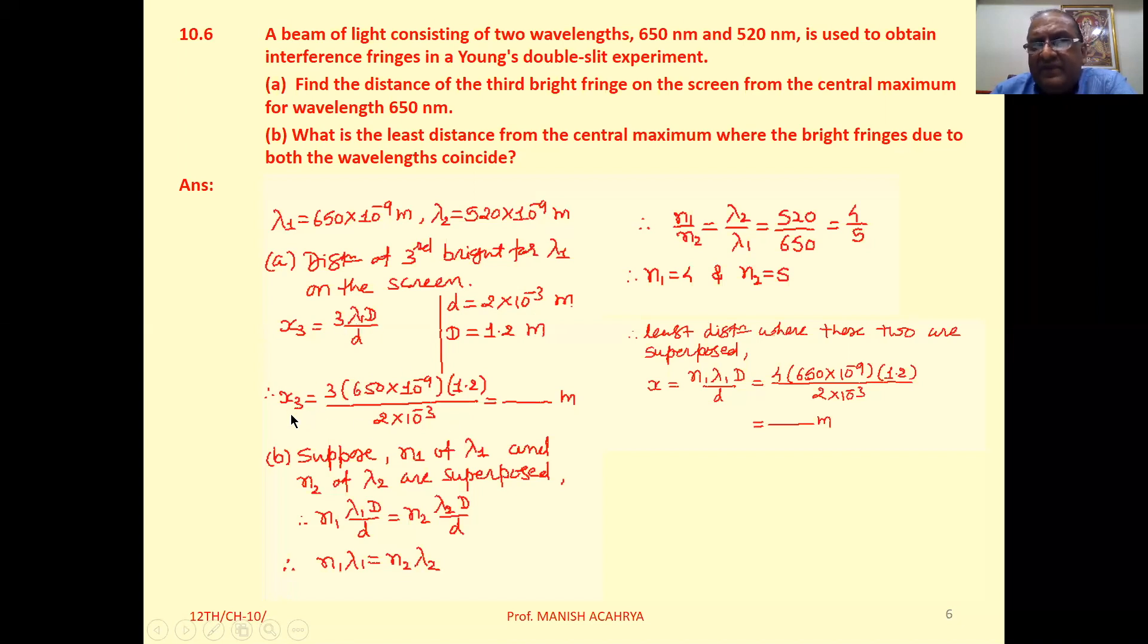So now substitute all the values here and then solve. You will get x₃, the distance of third bright for lambda 1 on the screen.